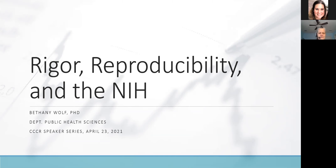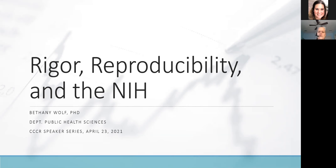My talk is on rigor and reproducibility, with a particular focus on the NIH, because for most of the folks on the line today, at some point you're likely to have been involved in a grant. We recognize that over the last 10 years, rigor and reproducibility really has become a major focus of the NIH and a requirement for all grant applications, and we want to make sure we understand what that means in the context of an NIH grant application and in terms of our science in general.